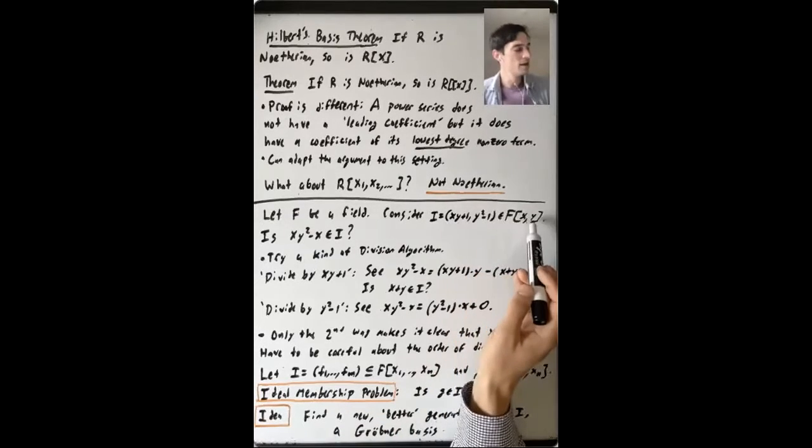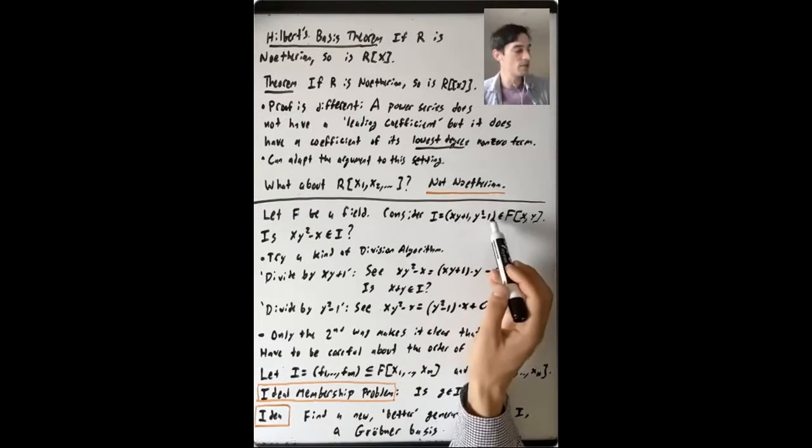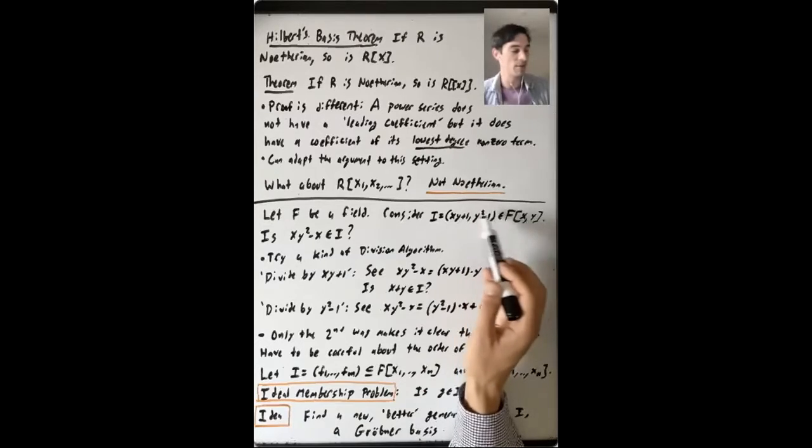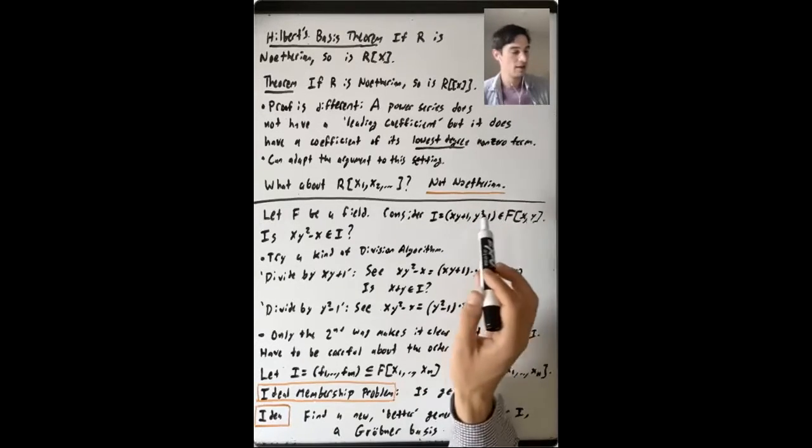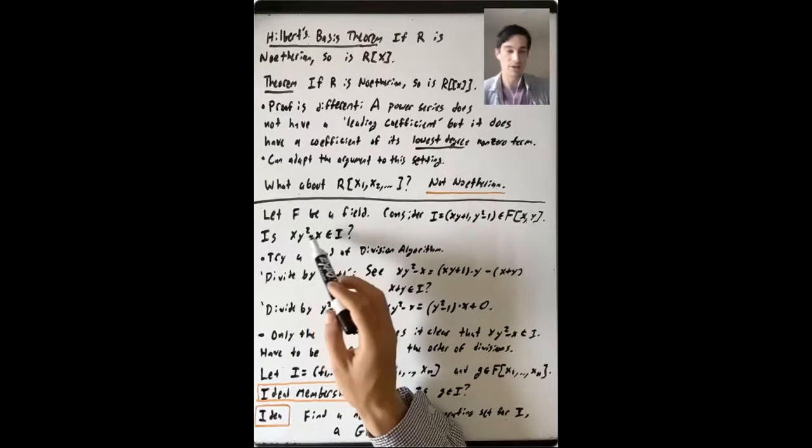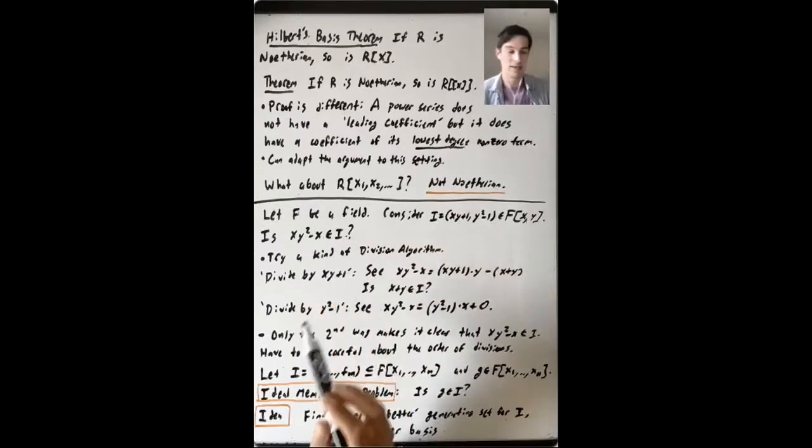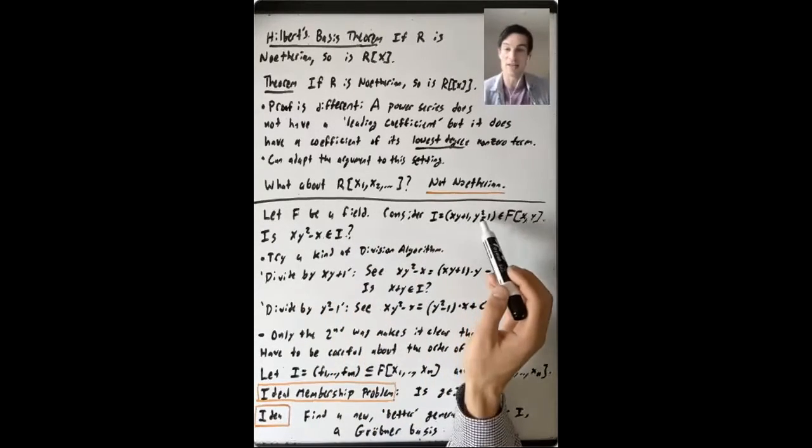But here we have this polynomial ring in two variables. We have this ideal generated by two things. And you can ask, okay, here's a polynomial, X times Y squared minus X. Is it in this ideal, or is it not in this ideal?